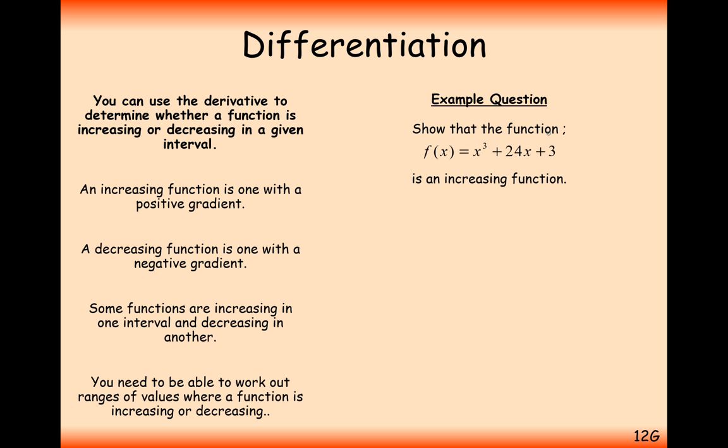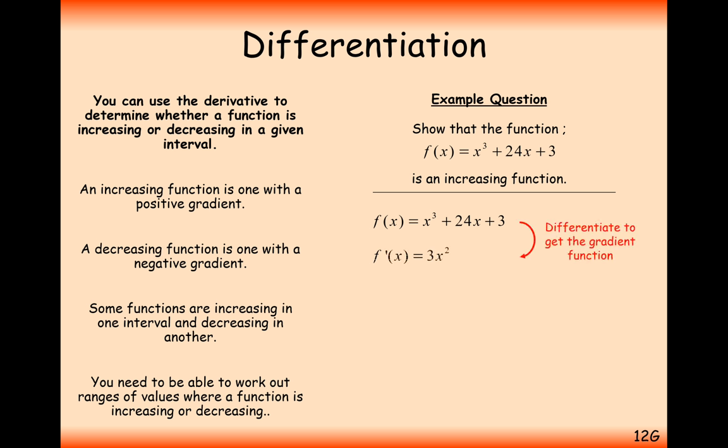Show that the function f(x) = x³ + 24x + 3 is an increasing function. That means no matter what value of x, the gradient is positive. To show the gradient is always positive, we differentiate — giving us 3x² + 24.